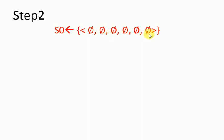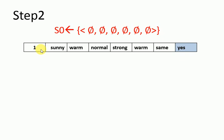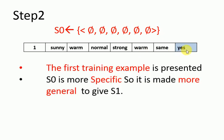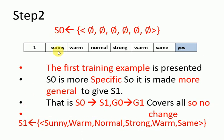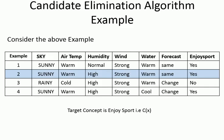S0 is most specific. The first training example is: sunny, warm, normal, strong, warm, same — and the target is yes (positive). Since S0 is very specific, it needs to be generalized to form S1. So S0 is updated to S1 by taking all the attribute values of this first example. G0 remains unchanged as G1, accepting any value with all question marks.